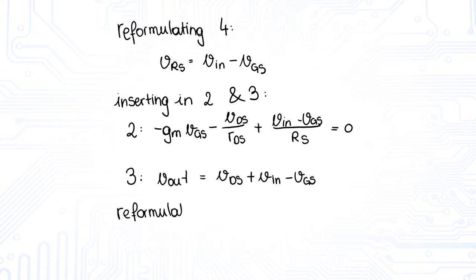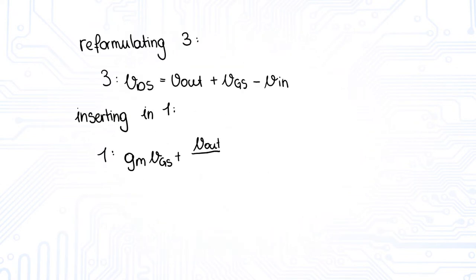Then we reformulate equation number 3 to VDS. Back again, we insert the reformulated equation into equation 1. We reformulate this equation to VGS.